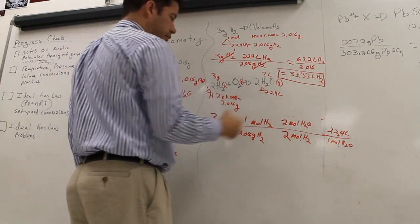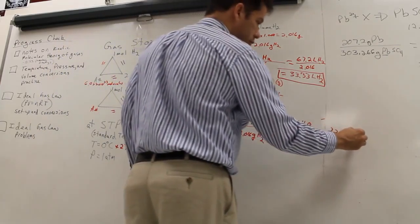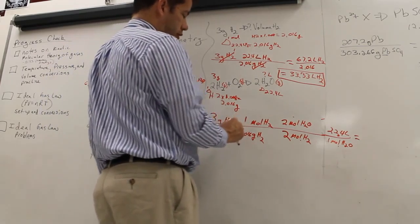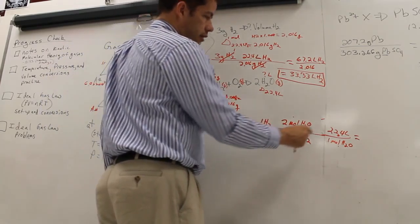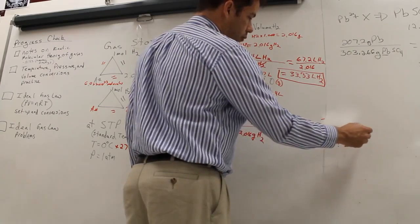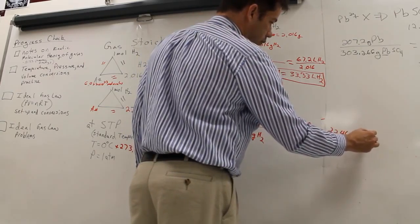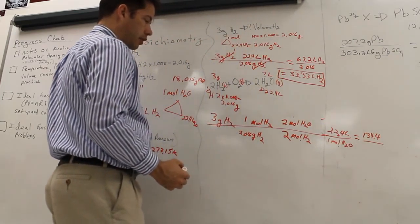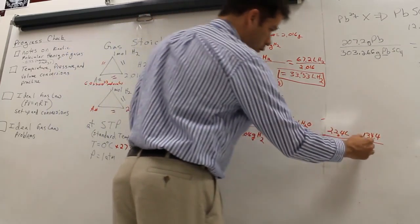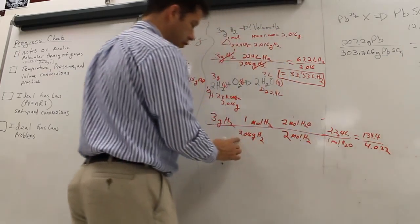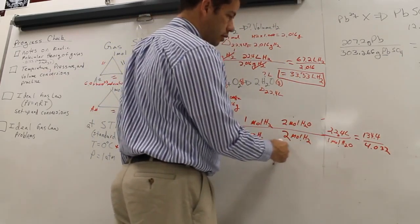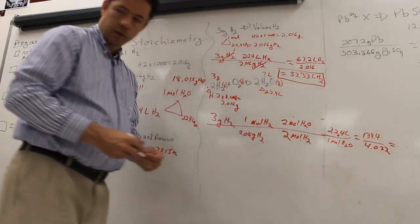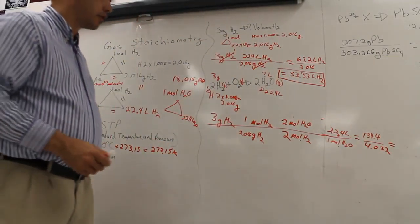Multiply across the top. Multiply across the bottom. And solve. So you could go 3 times 1 is 3. Times 2 is 6. Times 22.4 is 134.4. Might check my math in the calculator. Because I did it in my head. 4.032 is 2.016 times 2. Times 1 is 4.032. And then plug that in your calculator and see what you get.